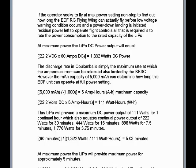If the operator seeks to fly at maximum power setting nonstop to find out how long the EDF RC flying wing can fly before low voltage warning conditions occur and power-down landing is initiated — with residual power left to operate flight controls — all that is required is to rate the power consumption to the rated capacity of the LiPo. At maximum power, the LiPo DC power output equals 22.2 volts DC times 60 amps DC, equaling 1332 watts of DC power. The MAH capacity of 5000 MAH can determine how long the EDF unit can operate at full power. Dividing 5000 milliamp-hours by 1000 equals 5 amp-hours maximum capacity.